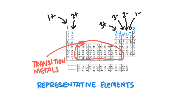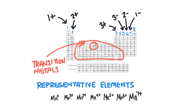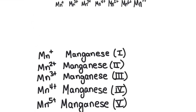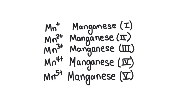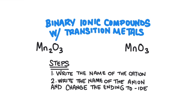A transition metal will have all kinds of different charges — like manganese. Manganese can have a charge of +1, +2, +3, +4, +5, +6, and +7. So how do I know which manganese it is in a compound? We have to somehow indicate the charge on the transition metal when we write the name. We indicate the charge by writing the appropriate Roman numeral after the name of the metal. So manganese with a +1 charge is manganese(I), and manganese with a 2+ charge is manganese(II), and so on.